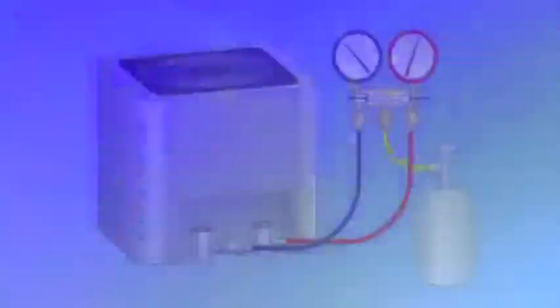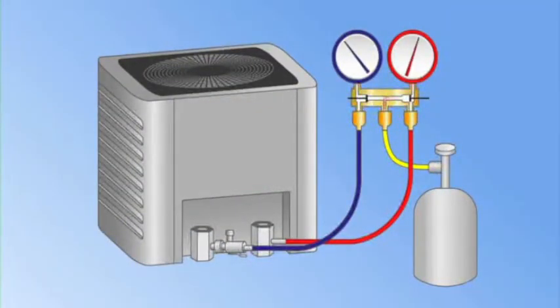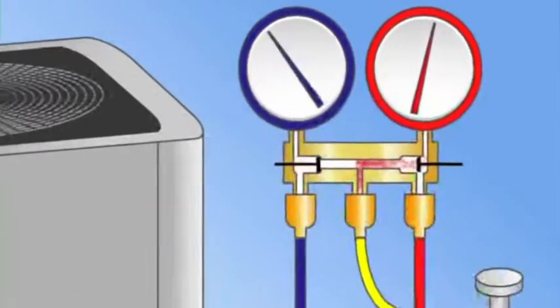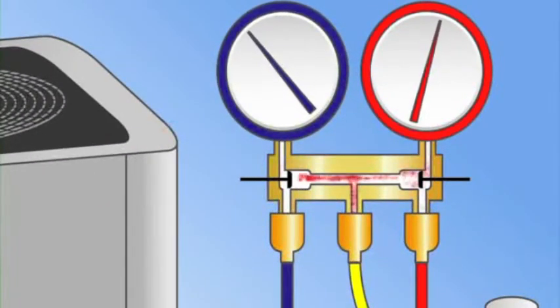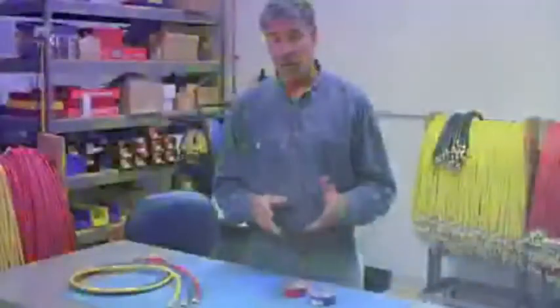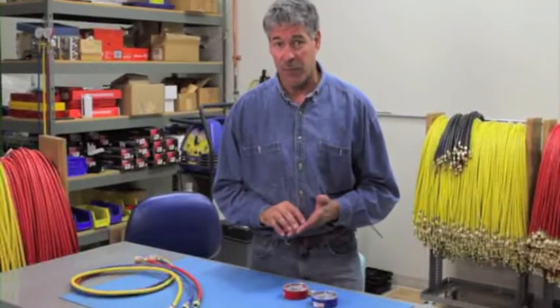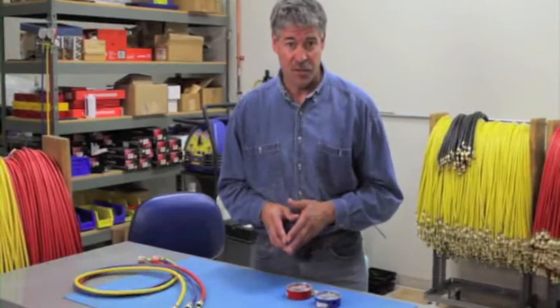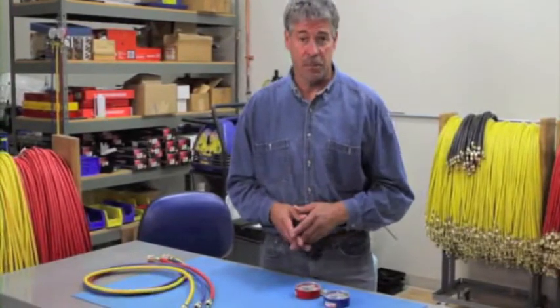Hi, it's Paul again. Overpressurization can occur when the manifold hoses are connected to a system in reverse or when high side system pressure is suddenly released to the low side through the manifold. This can also happen if you're using a manifold to read nitrogen test pressures or when the pressures are reversed in a heat pump.